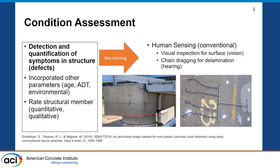There are a lot of factors to incorporate when you do a full condition assessment: defect detection, age, traffic, and environmental factors of that specific structure. Our condition assessment is based on both quantitative and qualitative methodologies. What we do nowadays is use some sort of human sensing — either vision or hearing — to detect certain defects. If it has surface manifestation, our human vision is relatively good and accurate. For subsurface defects, things get more challenging. You see chain dragging on the right, where every inspector listens to the chain being dragged on the concrete deck to detect delamination.